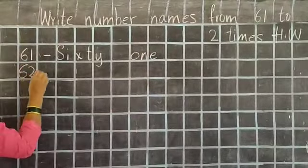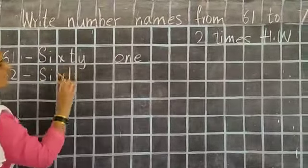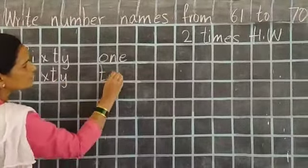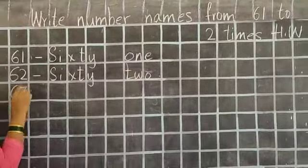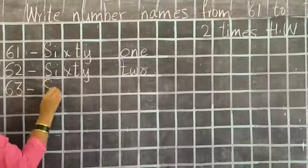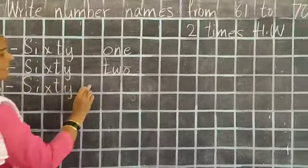Next, 62. Small dash, capital S. S-I-X-T-Y, sixty. Leave a box. T-W-O, two. 62. Next, 63. Small dash, capital S. S-I-X-T-Y, sixty. Leave a box.